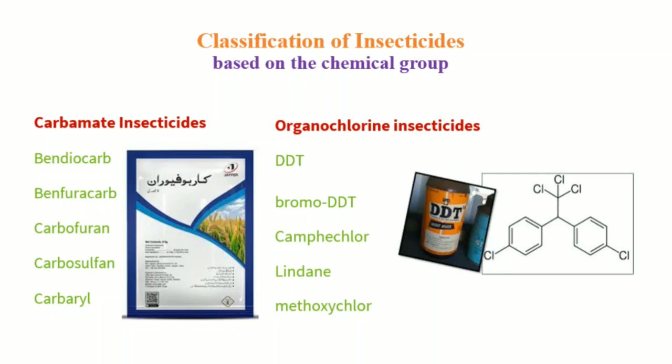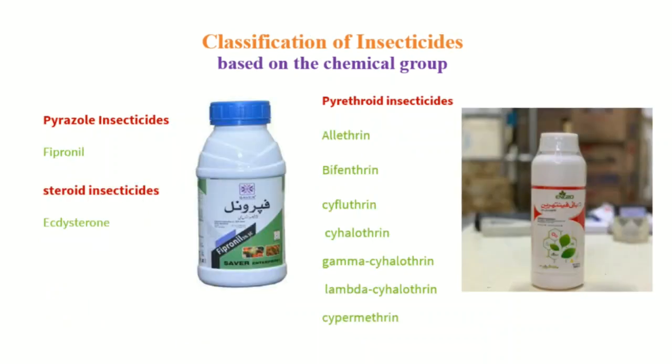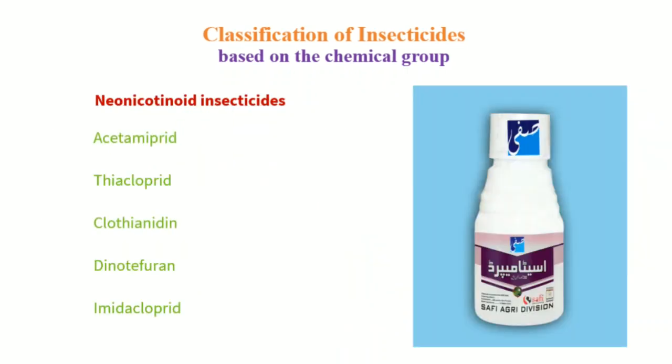Organochlorine insecticides include DDT and bromo-DDT. Chlorinated cyclodiene insecticides include aldrin, chlordane, and dieldrin. Organophosphorus insecticides include chlorpyrifos. Pyrazole insecticides include fipronil. Steroid insecticides include ecdysteroids. Pyrethroid insecticides include allethrin and bifenthrin. Neonicotinoid insecticides include acetamiprid and thiacloprid.